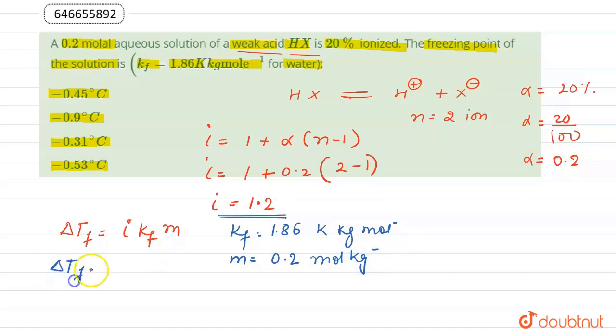Putting all these values in the expression, we get delta Tf is equal to 1.2 multiplied by 1.86 multiplied by 0.2, and here we get 0.4464. This is value of delta Tf, that is approximately 0.45 degree centigrade or 0.45 kelvin.